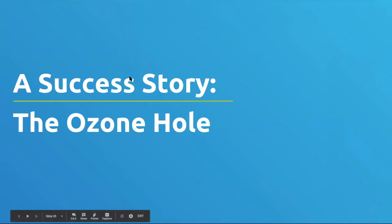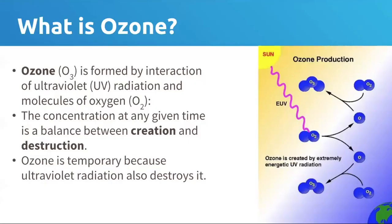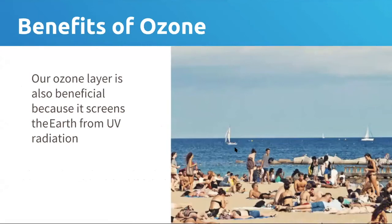People often wonder whether you can ever correct a problem that's so diffuse and widespread, caused by all of our activities. I like to look at the ozone hole as a positive story because this has a lot of parallels. Ozone is a molecule made of three atoms of oxygen, formed by the interaction of UV light in our upper atmosphere with oxygen gas. It's always being created and destroyed, but it's extremely important because the ozone in our atmosphere is protecting us from harmful ultraviolet radiation from the sun.